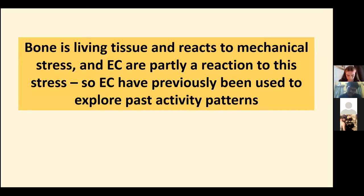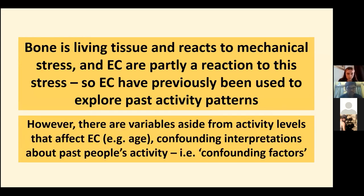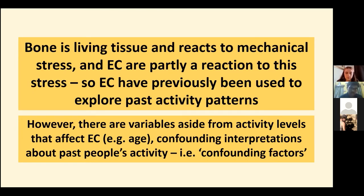FC entheses are also suggested to be more useful for activity-related research than fibrous entheses, for example by Weiss in 2015. However, activity is not the only thing that affects EC. It is also often reported that age affects EC expression, as well as EC having links to sex and body size amongst other factors. These other factors can confound the interpretation of activity from EC, which is why they are often called confounding factors.